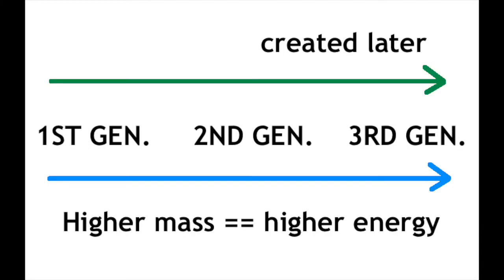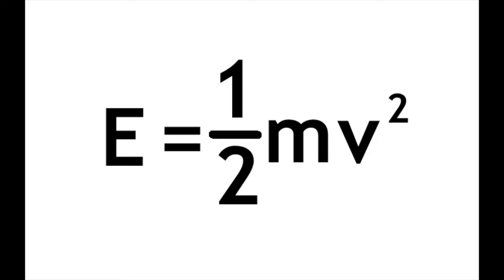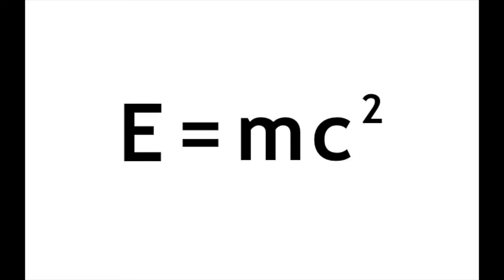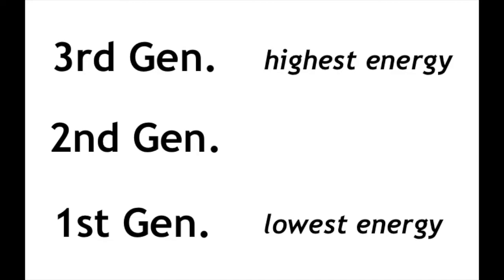The particles created later are also heavier, which means they carry more energy. Remember that energy is proportional to mass whether you're using the equation E equals half of mv squared or E equals mc squared. So the third generation has the highest energy, then the second, then the first. Still pretty intuitive, huh?